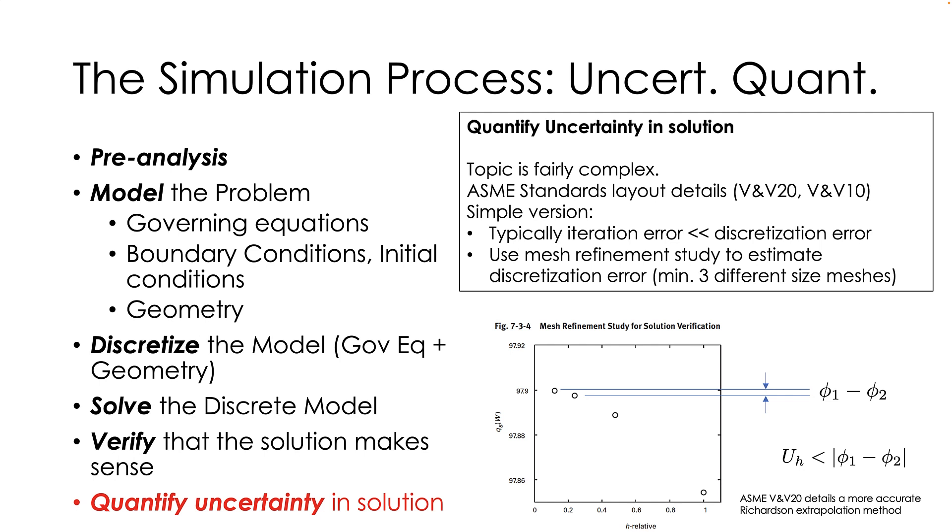So basically, step one is if you're using an iterative solver, make sure that you check to make sure that your iteration error is very, very low. Typically, if you take enough iterations, the iteration error will be less than the discretization error, which is the portion that comes from the mesh. Okay, step two is to use, so once you've done that, once you've used enough iterations to make sure that that statement is true, use what's called a mesh refinement study.